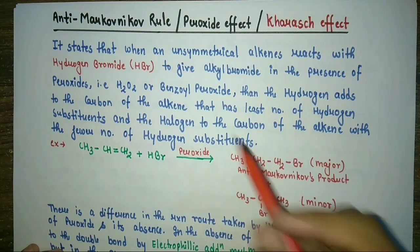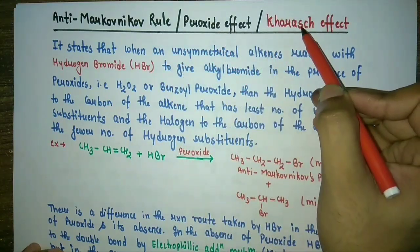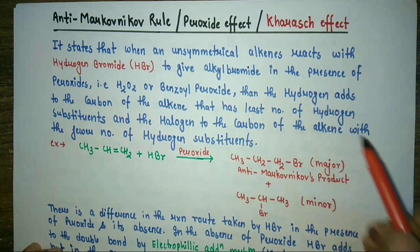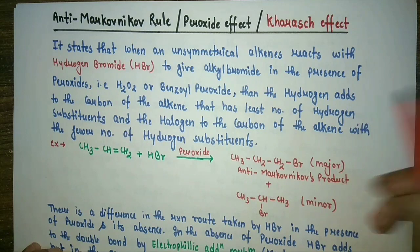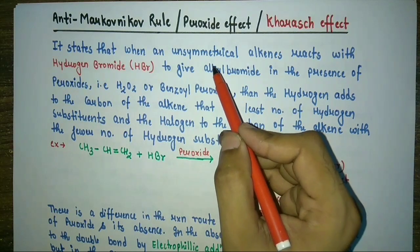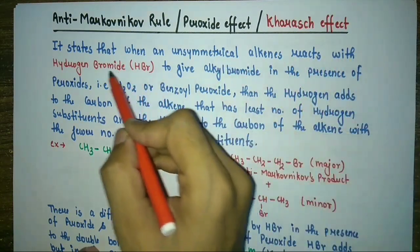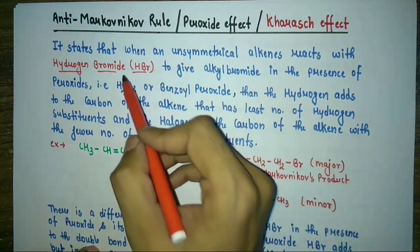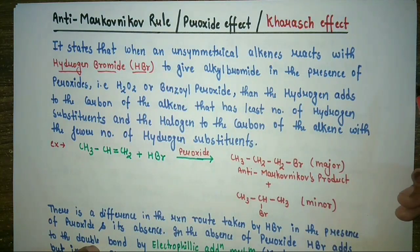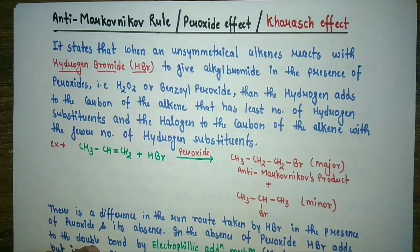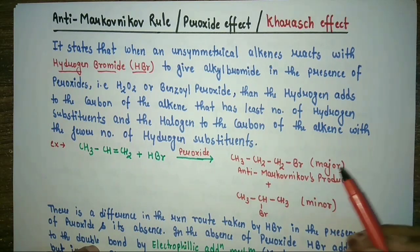Coming on to anti-Markovnikov's rule: it is also known as the peroxide effect or Kharasch effect. Kharasch was an organic chemist who defined the peroxide effect, explaining how anti-Markovnikov's orientation can be achieved via a free radical mechanism. This is just opposite to Markovnikov's rule. It is important to know that only hydrogen bromide (HBr) gives this anti-Markovnikov's rule. Any other hydrogen halide — HF, HCl, or HI — does not give this effect.